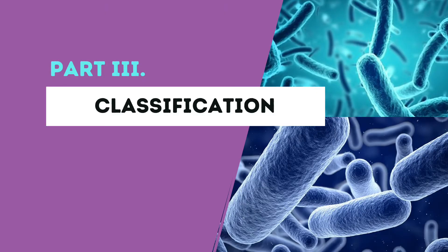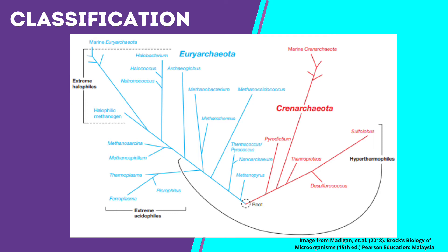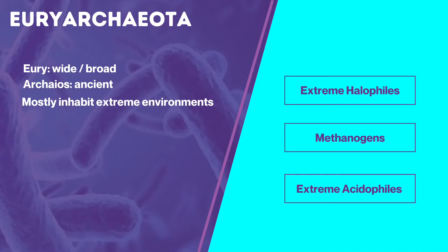Next, we're going to talk about the classification of Archaea. The image presents the phylogenetic tree of Archaea based on 16S rRNA gene sequence comparison. We have two main divisions: the Euryarchaeota and the Crenarchaeota. Euryarchaeota comes from the word 'eurys,' meaning wide or broad, and 'archaeos,' meaning ancient. By broad, it means they are a phylogenetically diverse phylum.